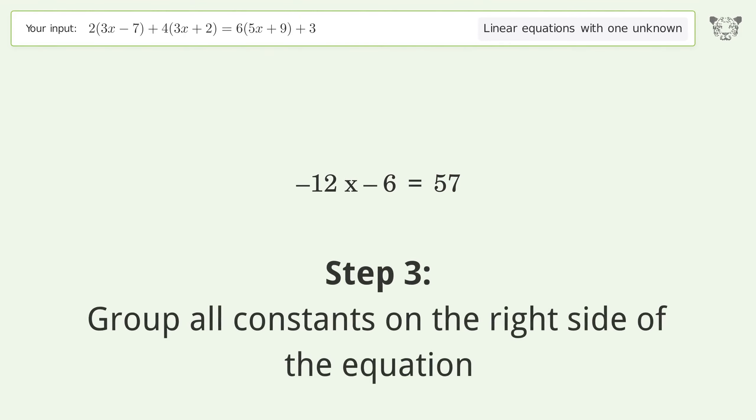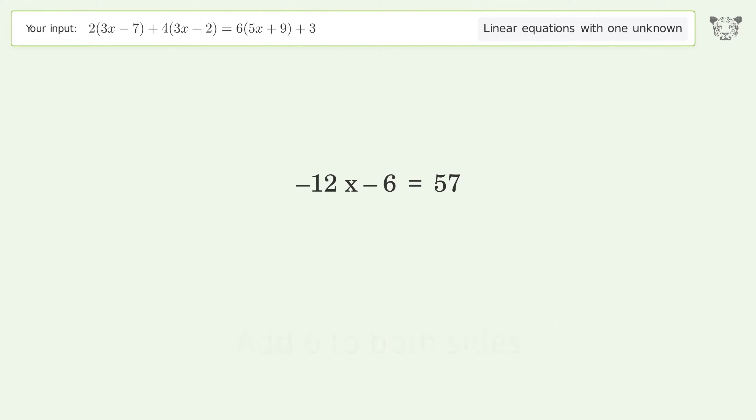Group all constants on the right side of the equation. Add 6 to both sides. Simplify the arithmetic.